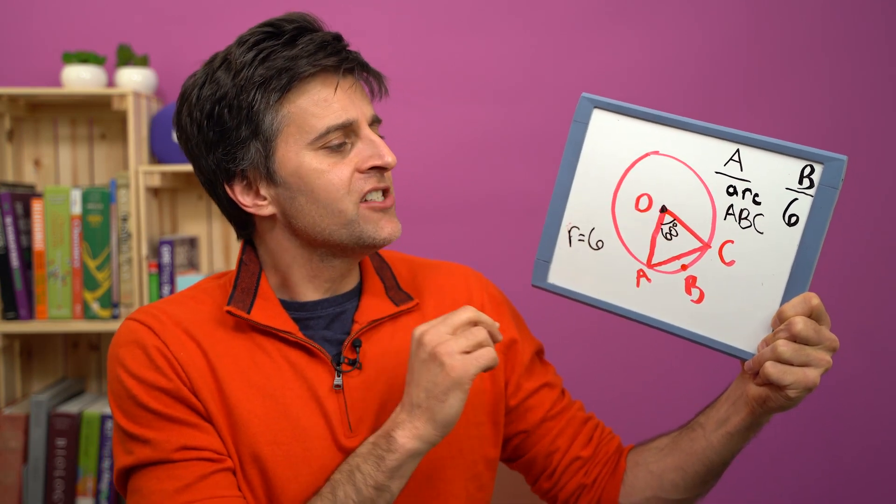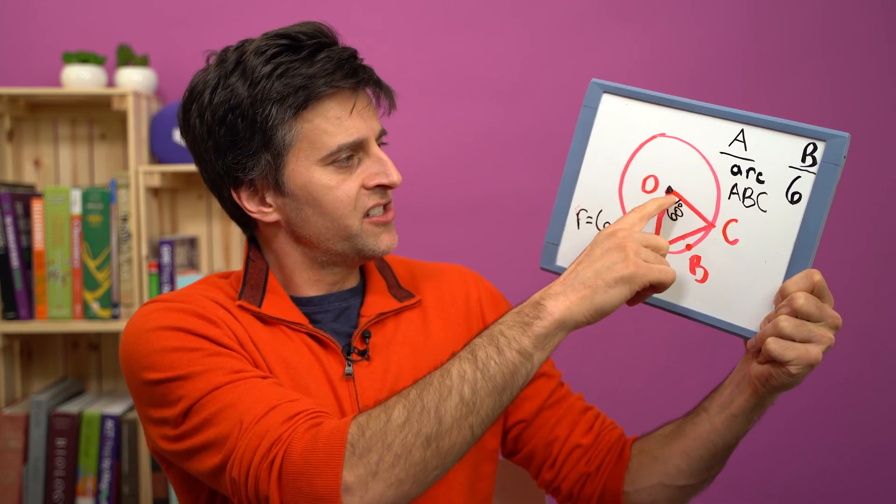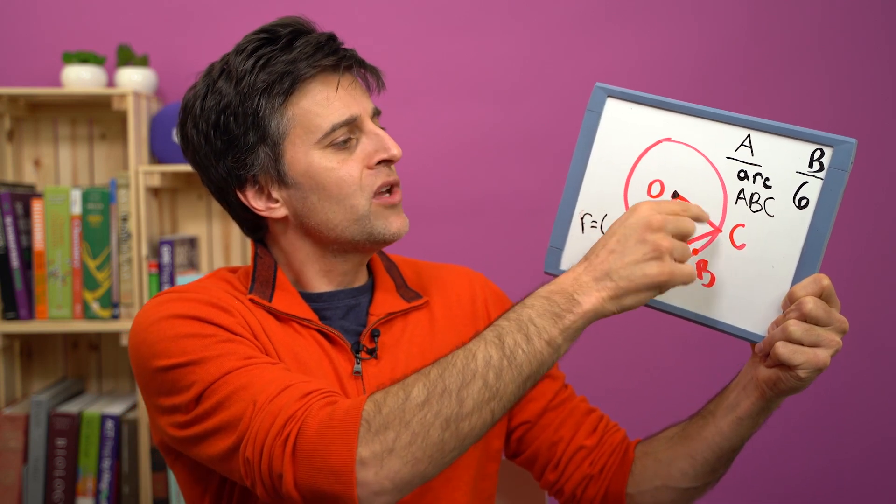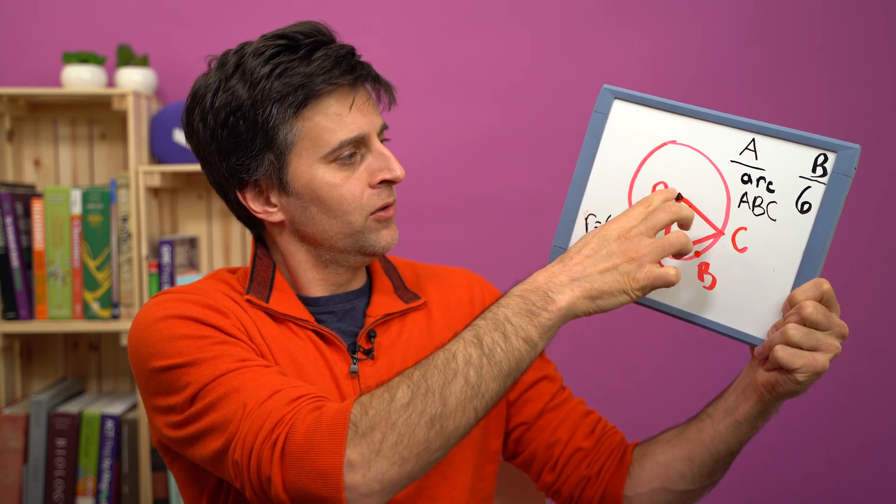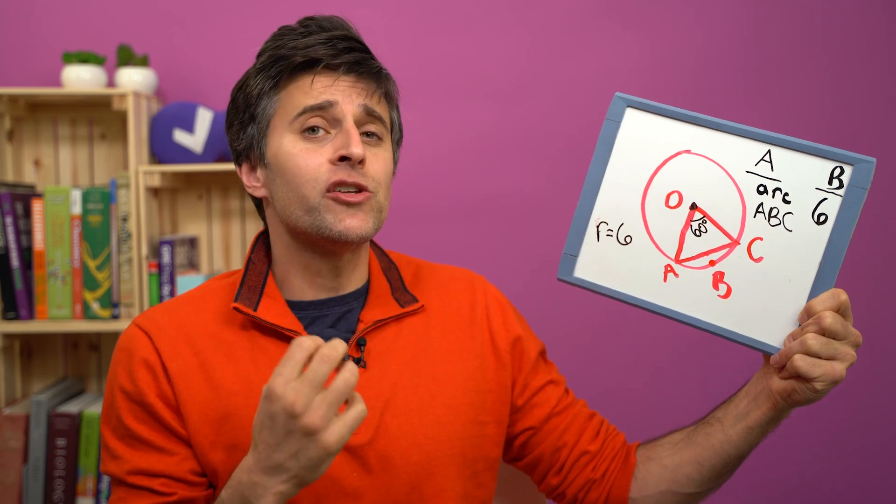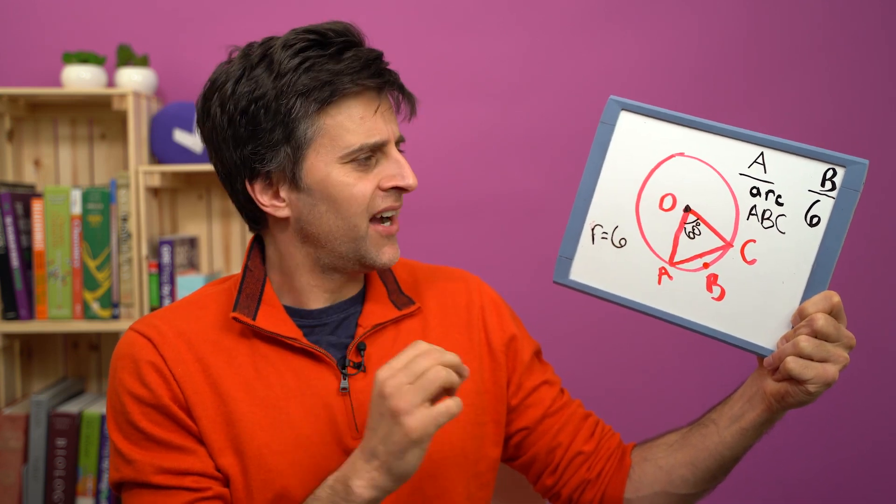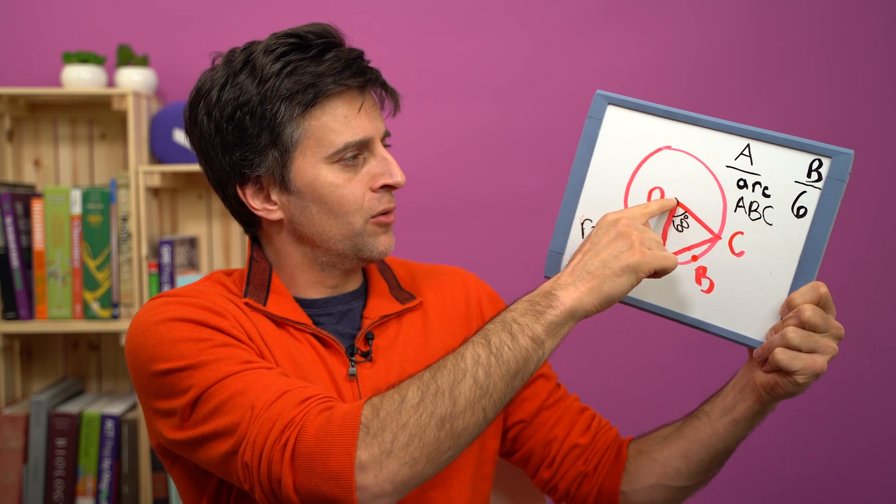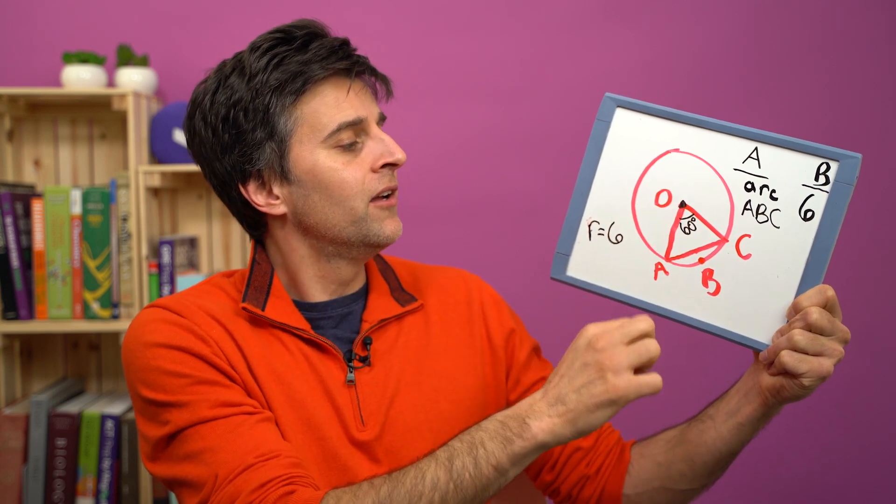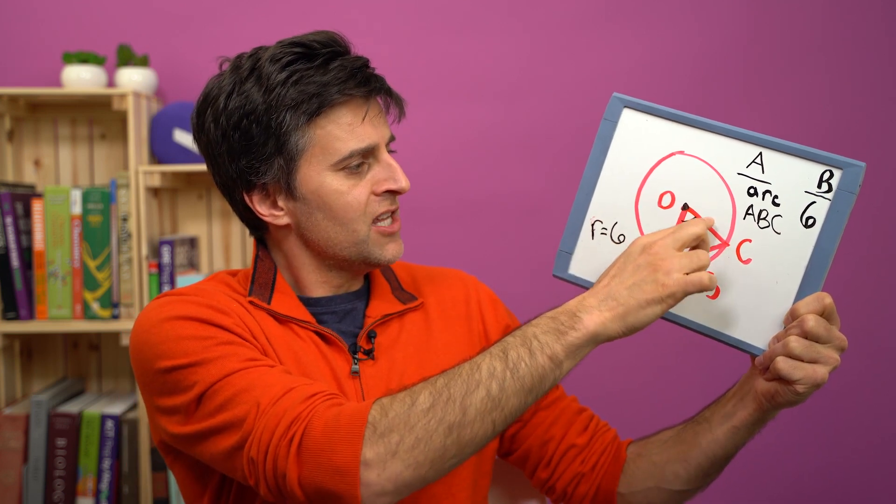Well, a couple things you want to look at here is this triangle. If this is 60 degrees, then we know that angle OCA and angle OAC actually have to be equal to each other because they are equal sides. If you have two sides that are equal—both OA and OC are radii—that means their opposite angles are equal.